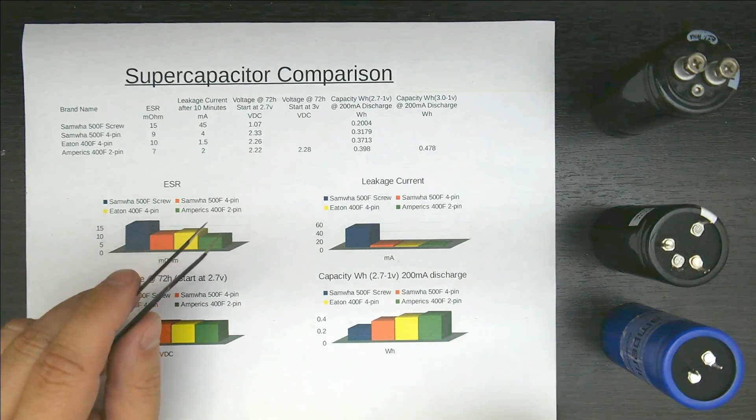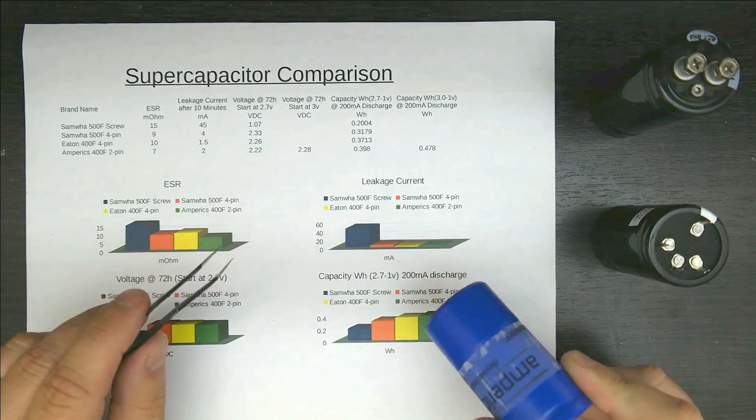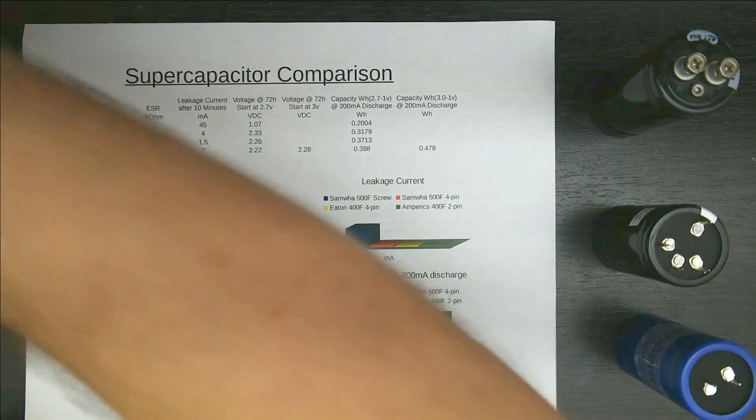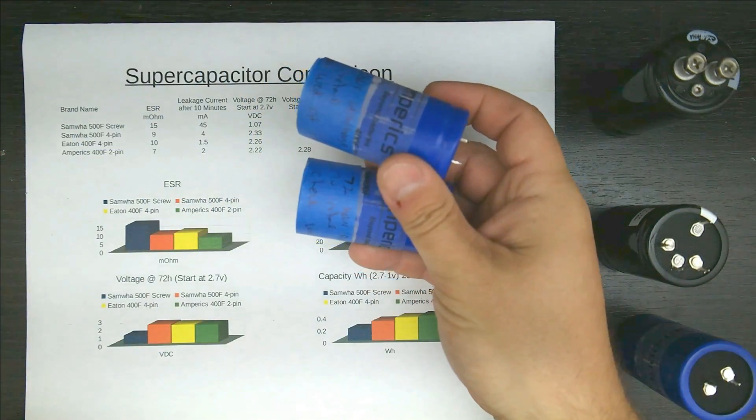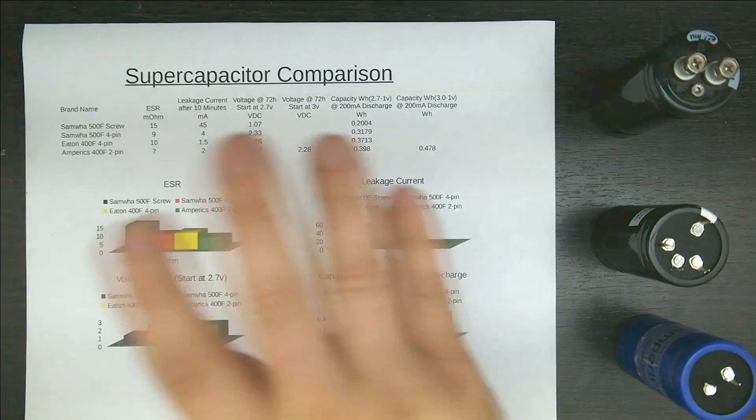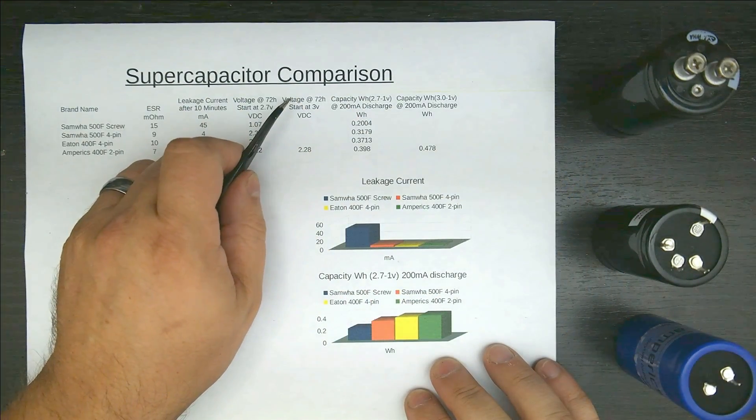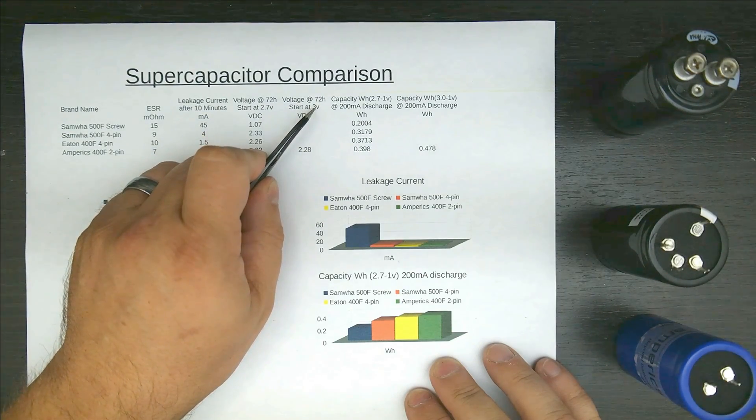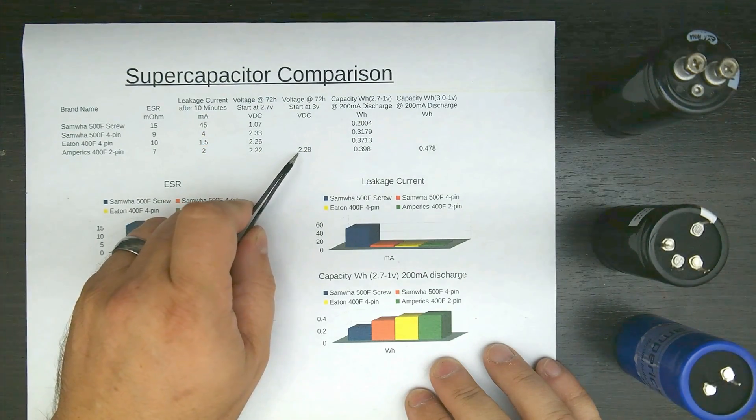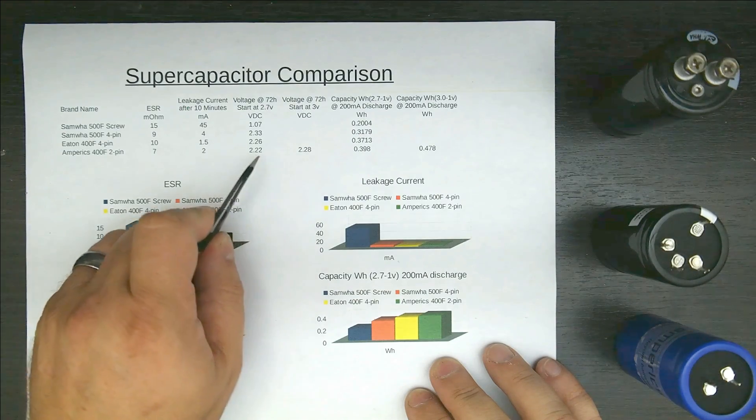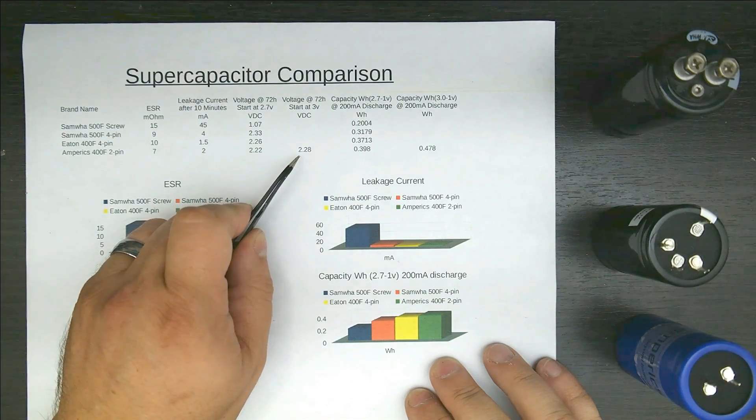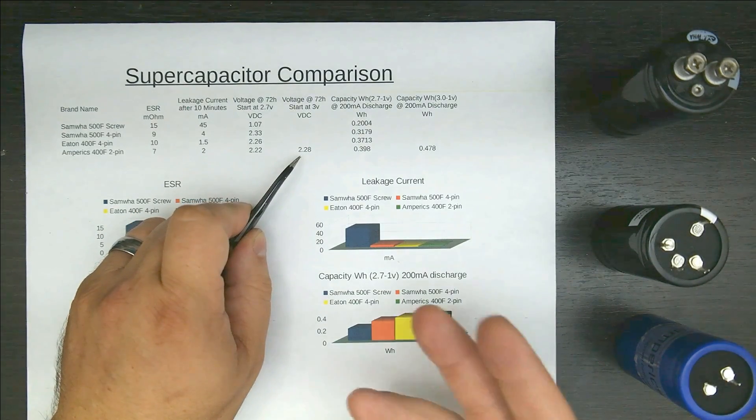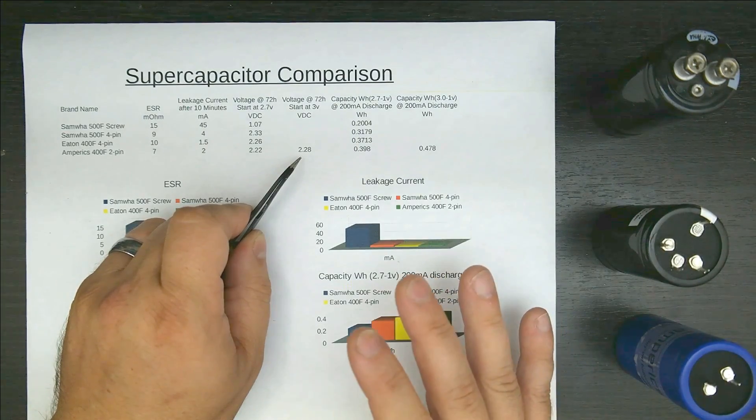Now at the same time also, remember this capacitor is also rated for 3 volts. So I tested two of them. You can see the tape's still on them. One I set at 2.7 volts and also one at 3 volts. So again, the voltage at 72 hours and I started it at 3 volts. It came out to 2.28. The extra voltage seems to be like a nice overhead while operating, but it doesn't really give you extra capacity too much and longevity.